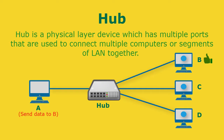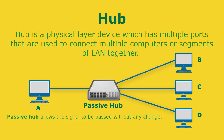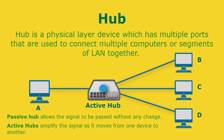Hubs can be passive or active. A passive hub allows the signal to be passed without any change. An active hub amplifies the signal as it moves from one device to another, which helps to extend the range of the network without using repeaters.